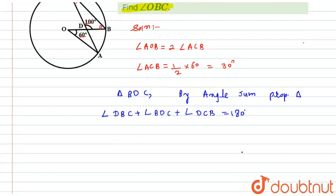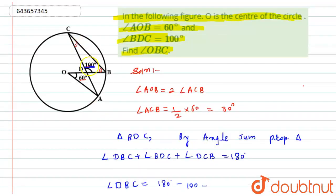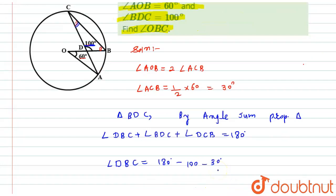I will directly put the values, so I will get angle DBC equal to 180 minus this angle D which is 100 degrees minus angle BCD which we just calculated as 30 degrees.